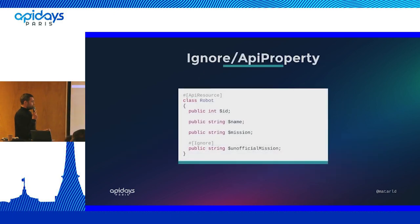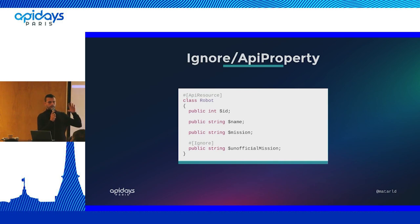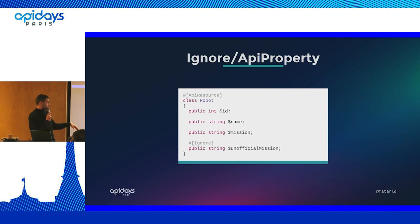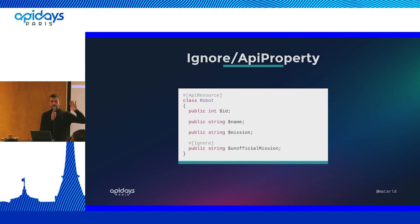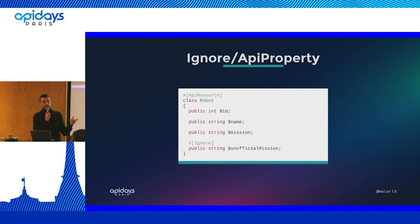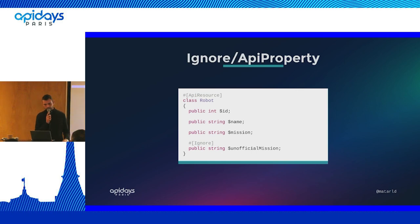A first way, which is quite simple, is to leverage the ignore attribute of the Symfony Serializer. API platform relies a lot on Symfony Serializer, so they share many features. That attribute simply permits ignoring a property during serialization. It makes sense to act on properties because a property and its value become the key-value pair of the normalized data. If the data is not in the normalized array, it won't be shown in the stream.